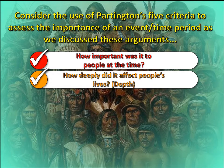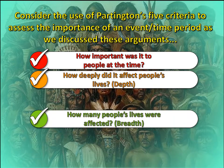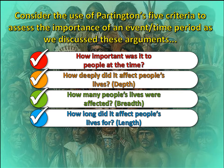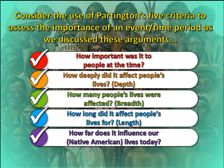Secondly, how deeply did it affect people's lives, or did it just produce surface level change? Thirdly, how many people's lives were affected, or was it just a small part of the Native American population? Fourthly, did it have a long term impact, or were the effects felt for only a short period of time and then quickly replaced or forgotten? And then lastly, how far does it influence Native American lives today? These five questions help you to decide the relative importance of an event or time period.